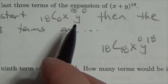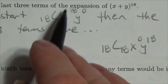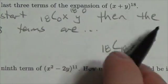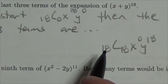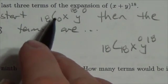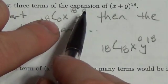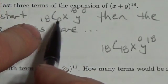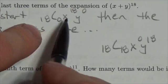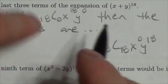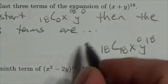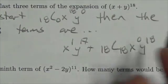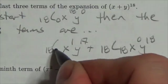So what has happened here is the exponent on the x has dropped to 0, and the exponent on the y has increased to 18. As the exponent on the y has increased, the second value in our combination has also increased. So the second-to-last term would be 18 choose 17, x to the 1, y to the 17.